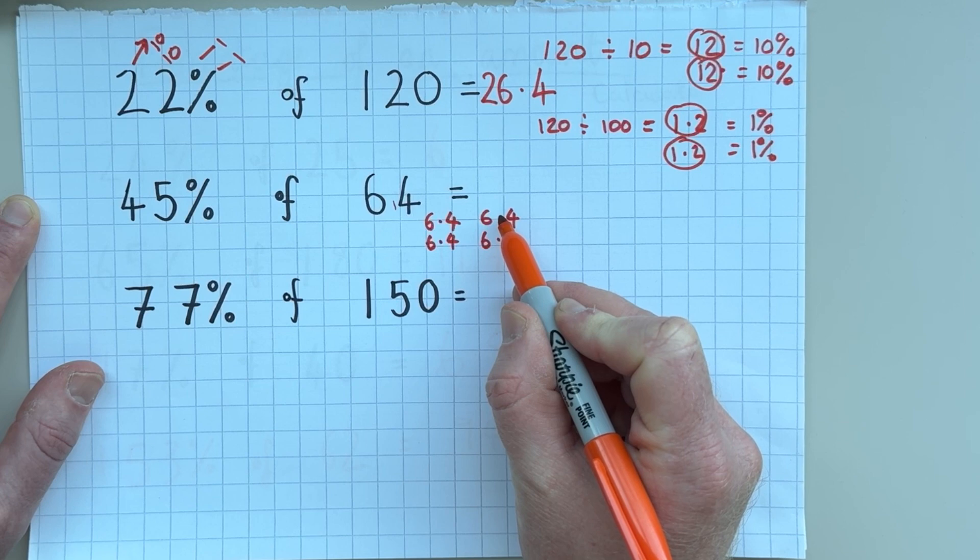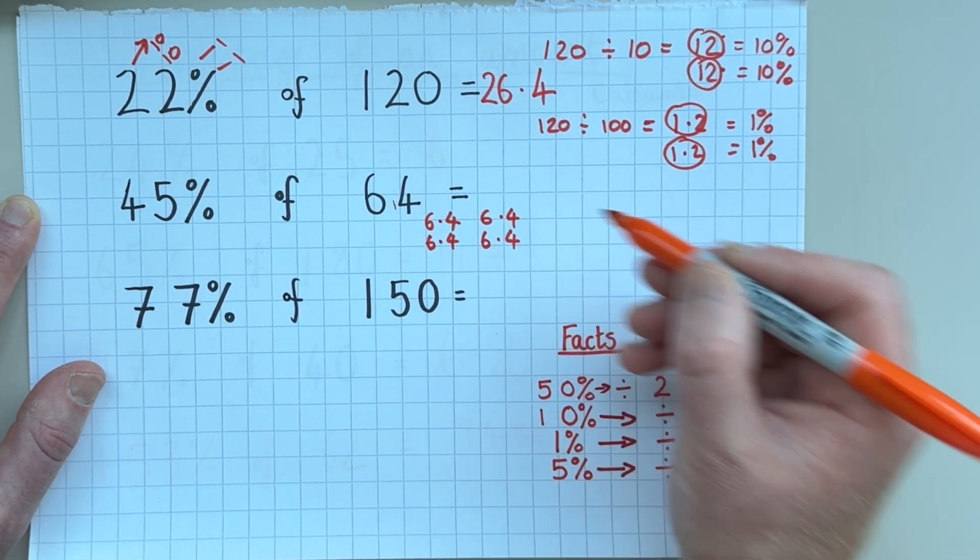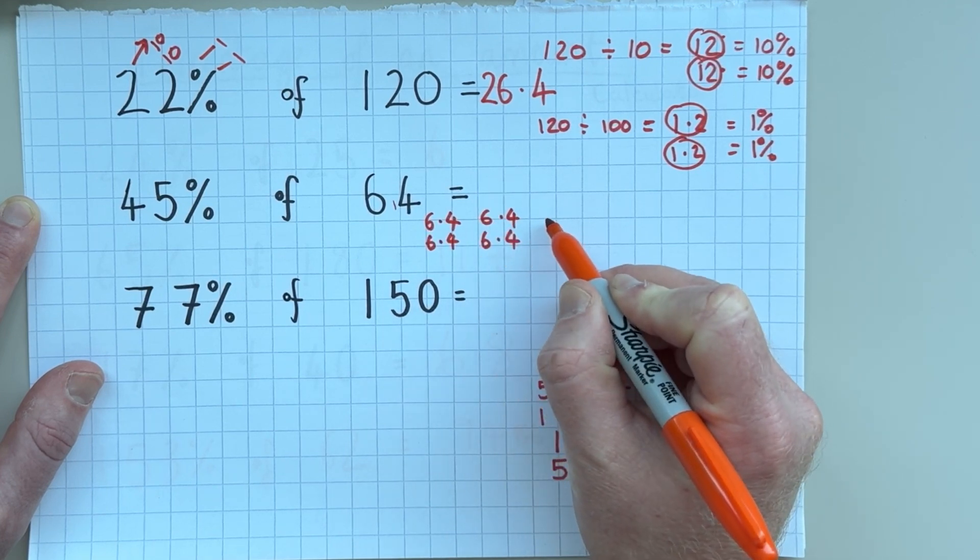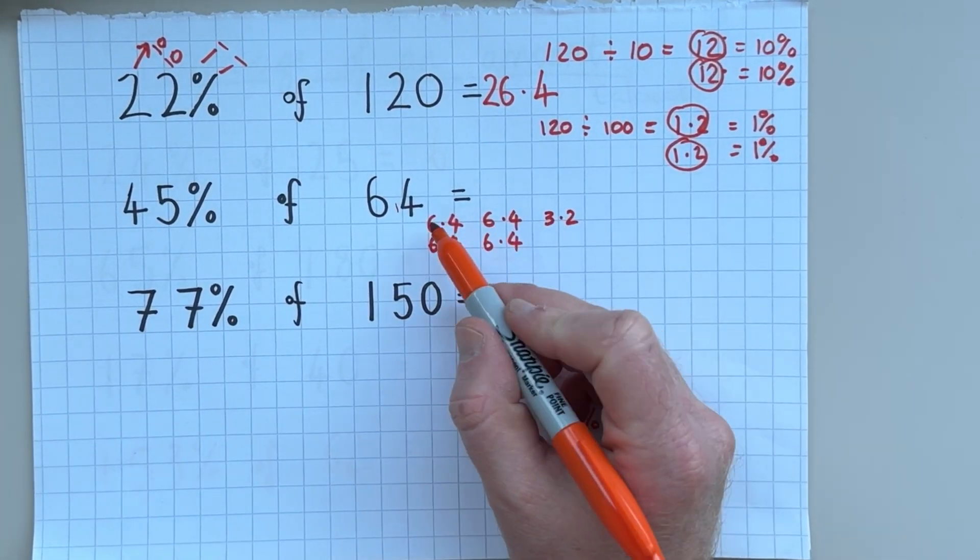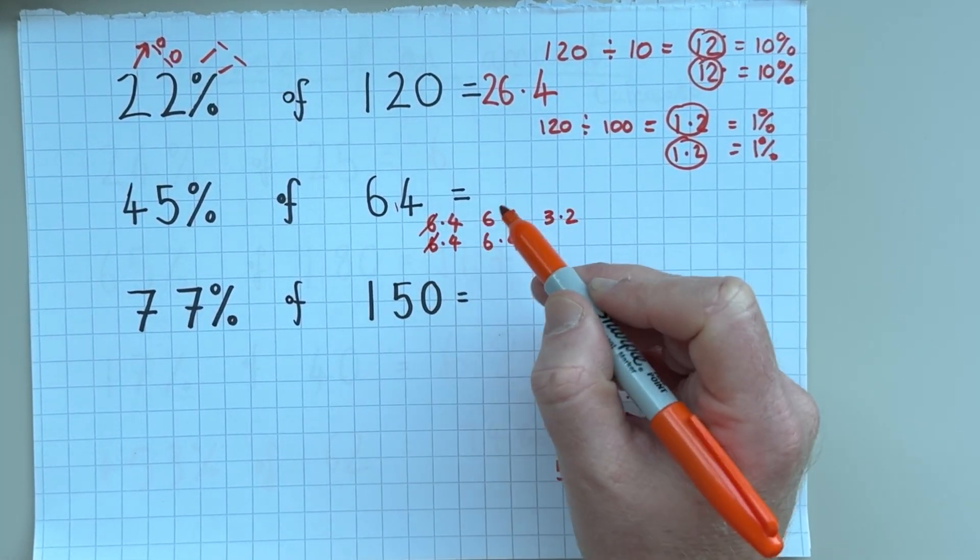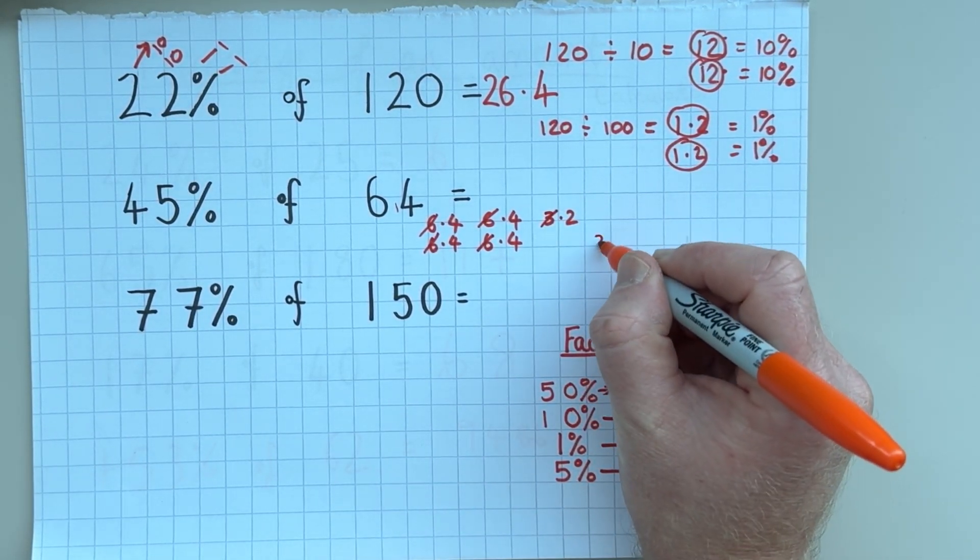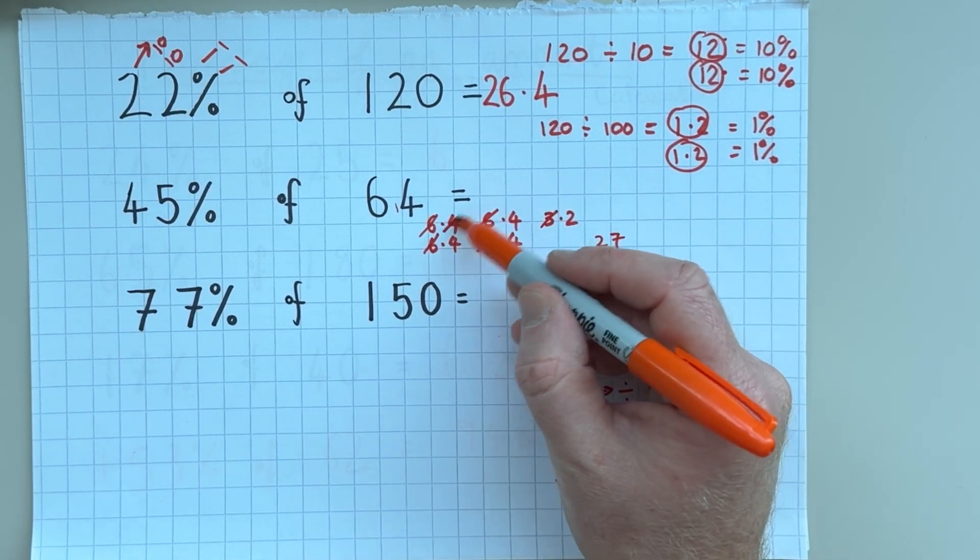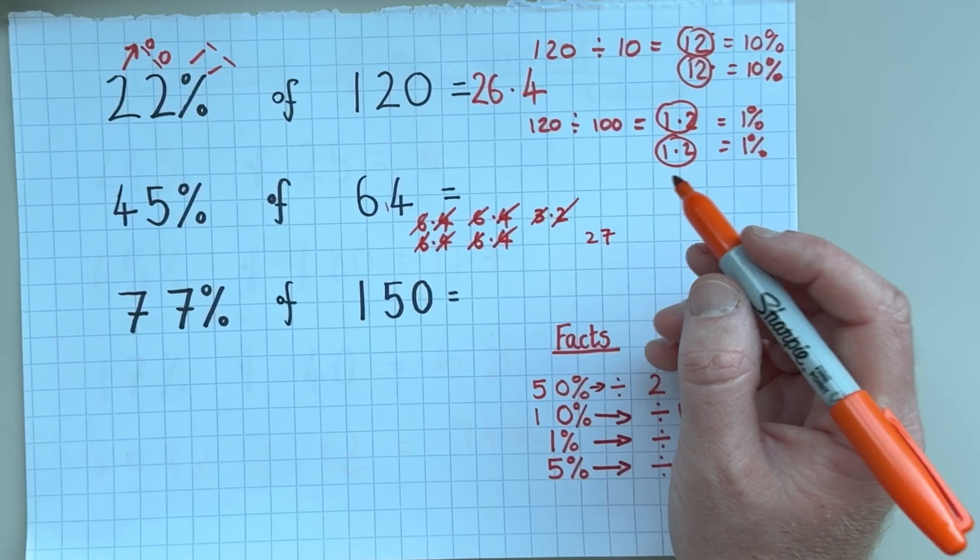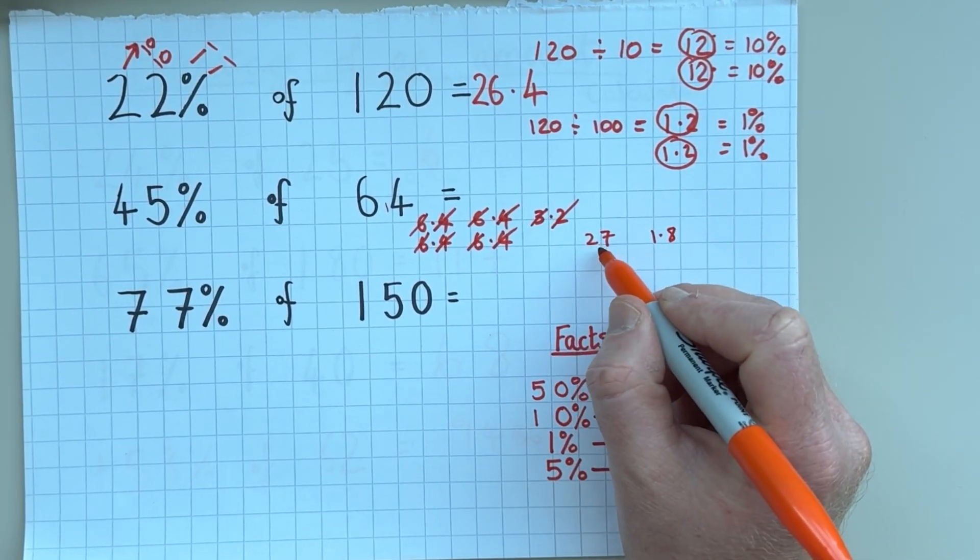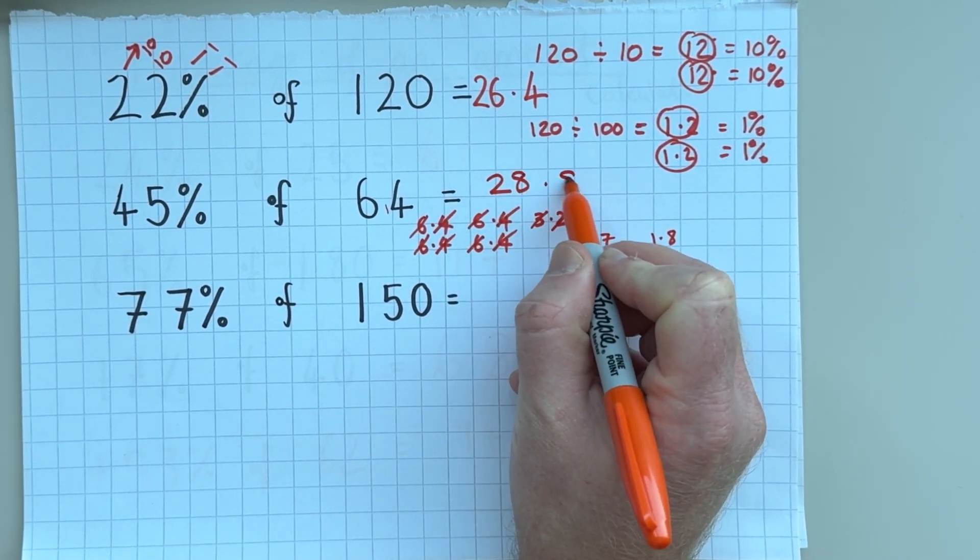So if I've worked out what 10% is, which is 6.4, 5% must be half of 10%. And half of 6.4 is the same as 3.2. So if I add all these together, 6, 12, 18, 24, 27. So I'll just write that there for now until I've added the decimals. 4, 8, 12, 16, 18, which is 1.8. So 27 and 1.8 gives us 28.8.